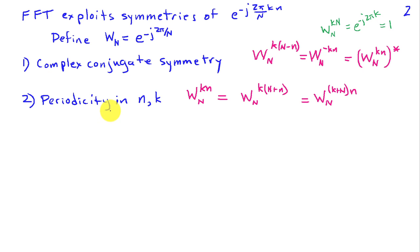The second property that plays an important role is periodicity. This W_N is periodic in both k and little n with period capital N. So if I add capital N to little n, I get the exact same result as I started from. And if I add capital N to k, I also get the same result. This basically also follows from this property that W^N equals 1.